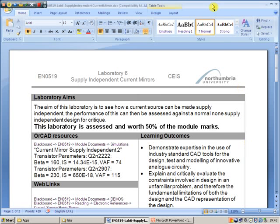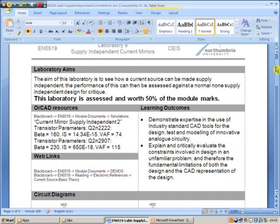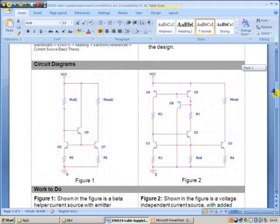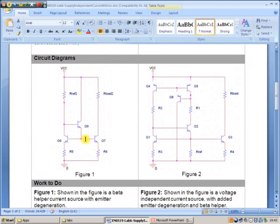Okay, Laboratory 6: Supply Independent Current Mirror. Please note we've got two sets of transistor parameters because we're using PNP as well as NPN. Figure 1 is what you've already seen before, a standard beta helper.